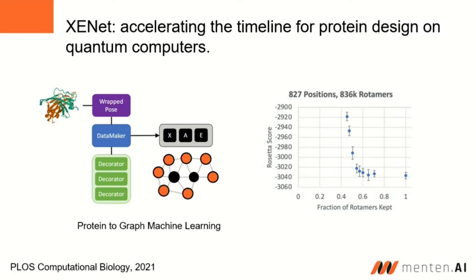We saw that we could actually decrease up to 40% of the rotomers needed for design without losing the quality of the molecules generated. A 40% decrease in the number of rotomers needed is actually significant because this is an exponential combinatorial problem. We could use this technique to increase the size of problems that we can tackle on the D-Wave quantum computer.